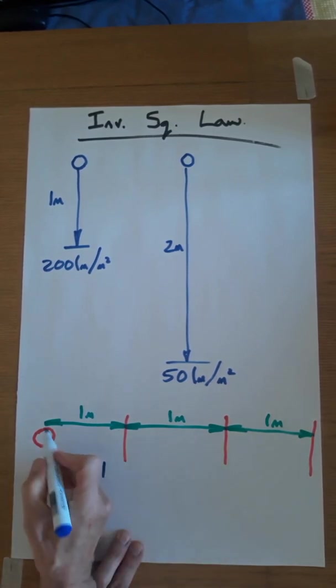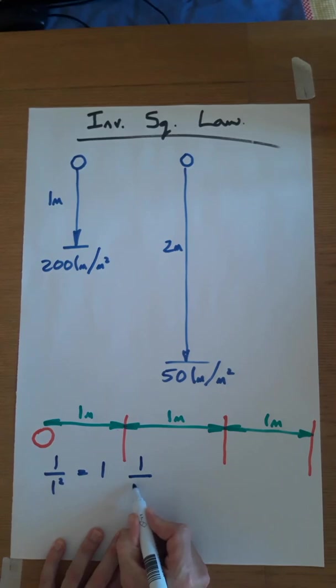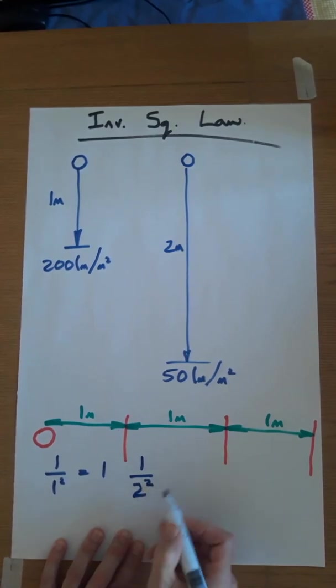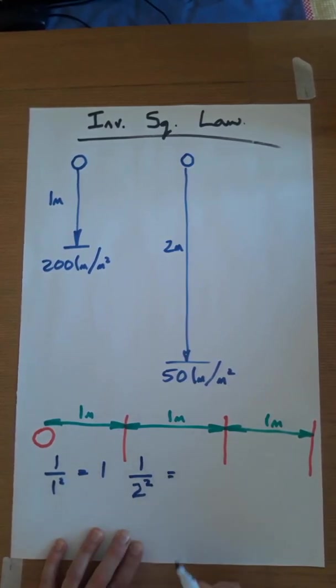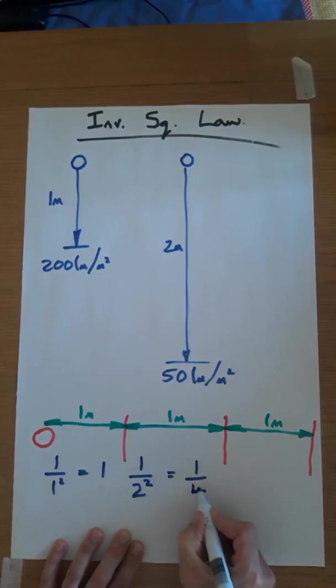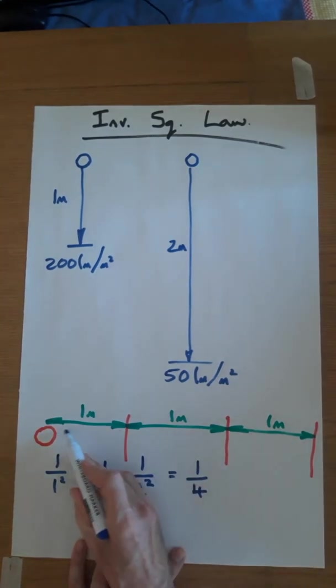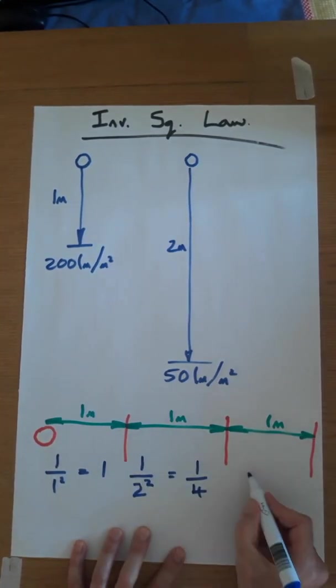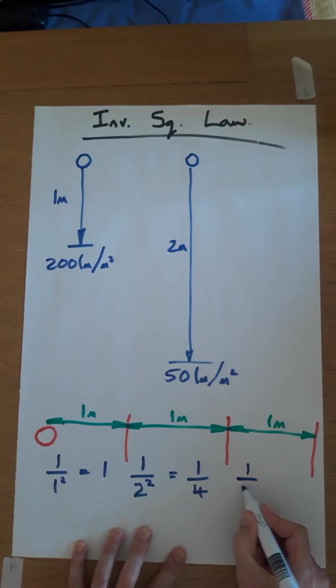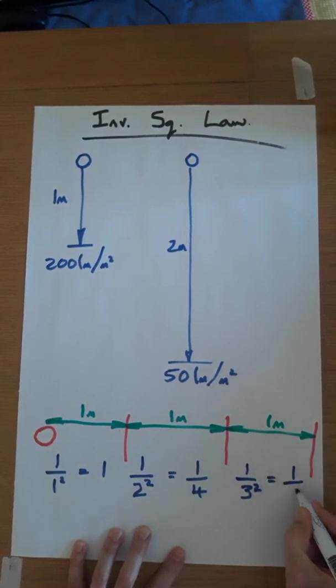If we move on to this one the distance is two metres, it's one over two squared. One over two squared is a quarter. So if we now look at three metres, one over three squared is one over nine.